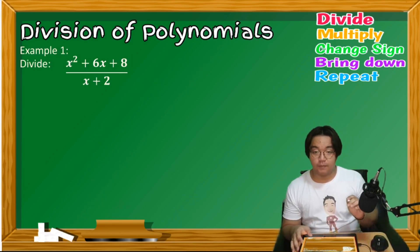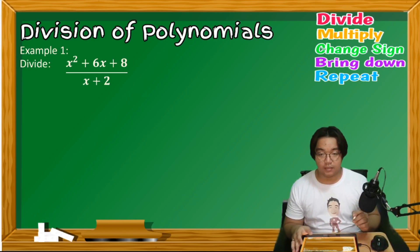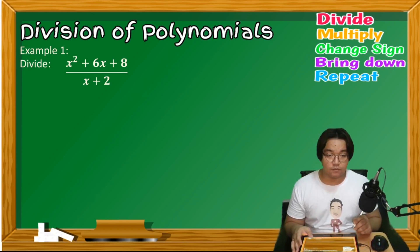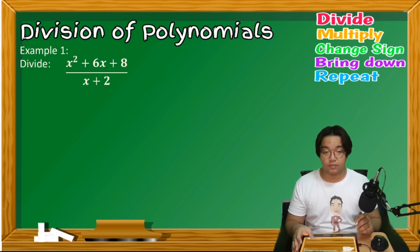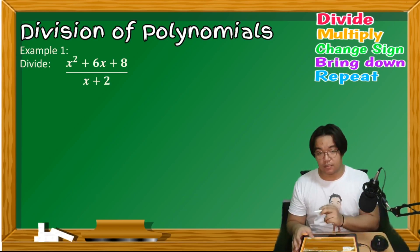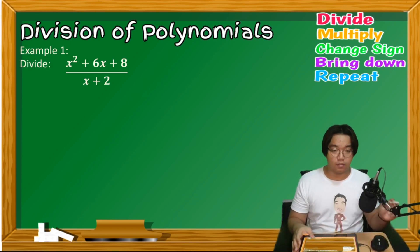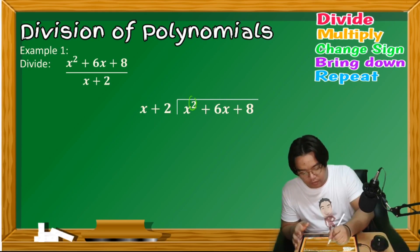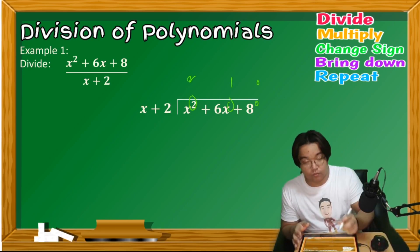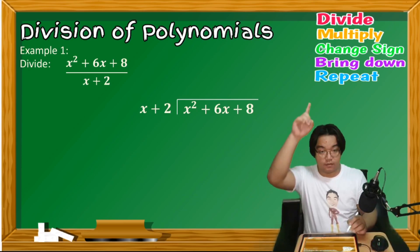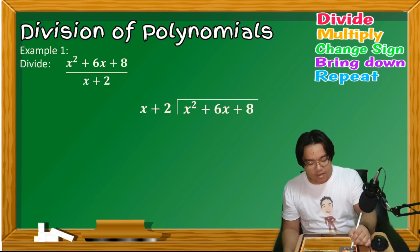Example 1: Divide x² + 6x + 8 by x + 2. The first step in the long division process is to arrange the terms. For polynomials, make sure all terms from the highest degree down to the constant are complete. Here, x² + 6x + 8 has degree 2, degree 1, and a constant of degree 0, so we can now proceed.